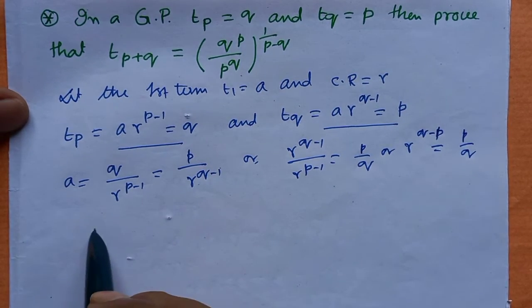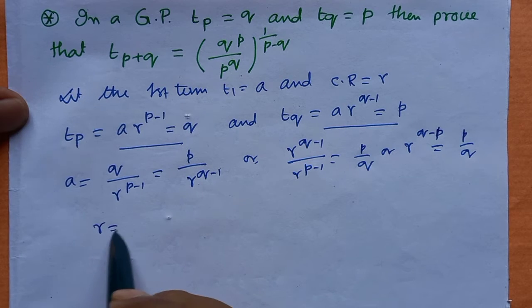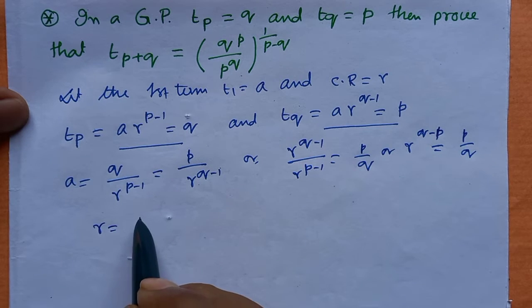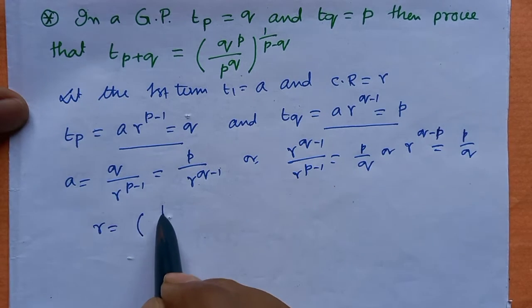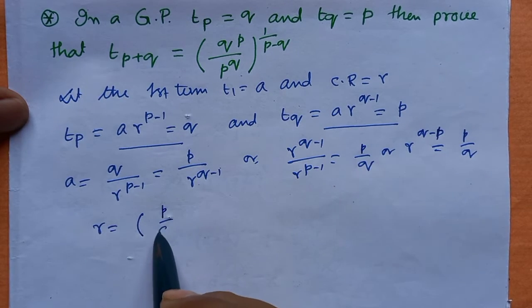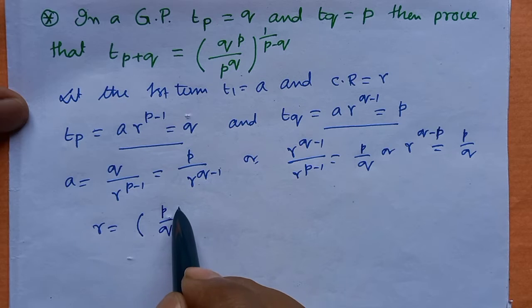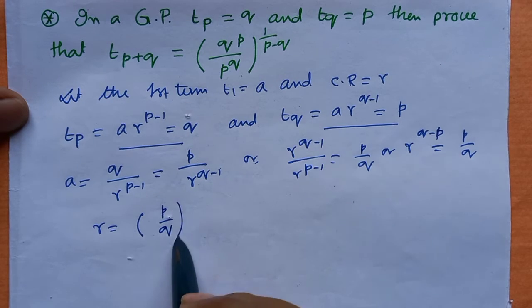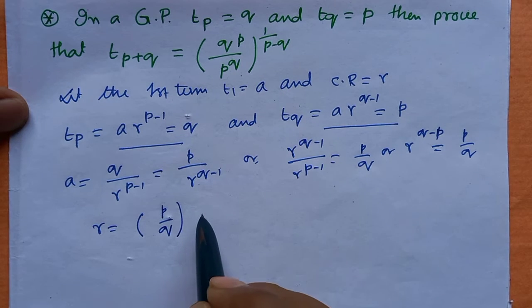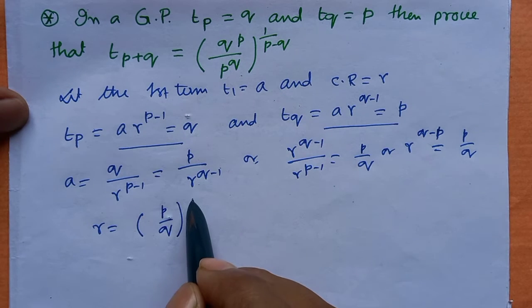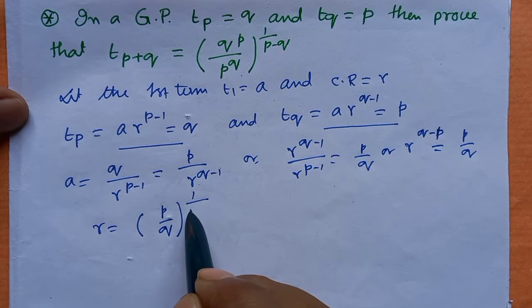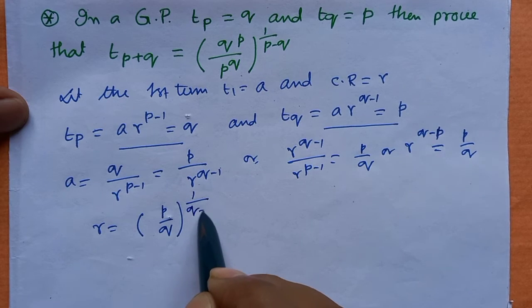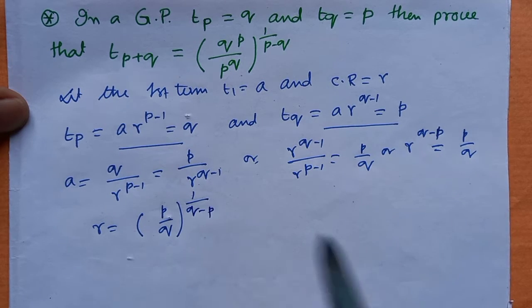So we can write r equals (p by q) whole to the power 1 by (q minus p).